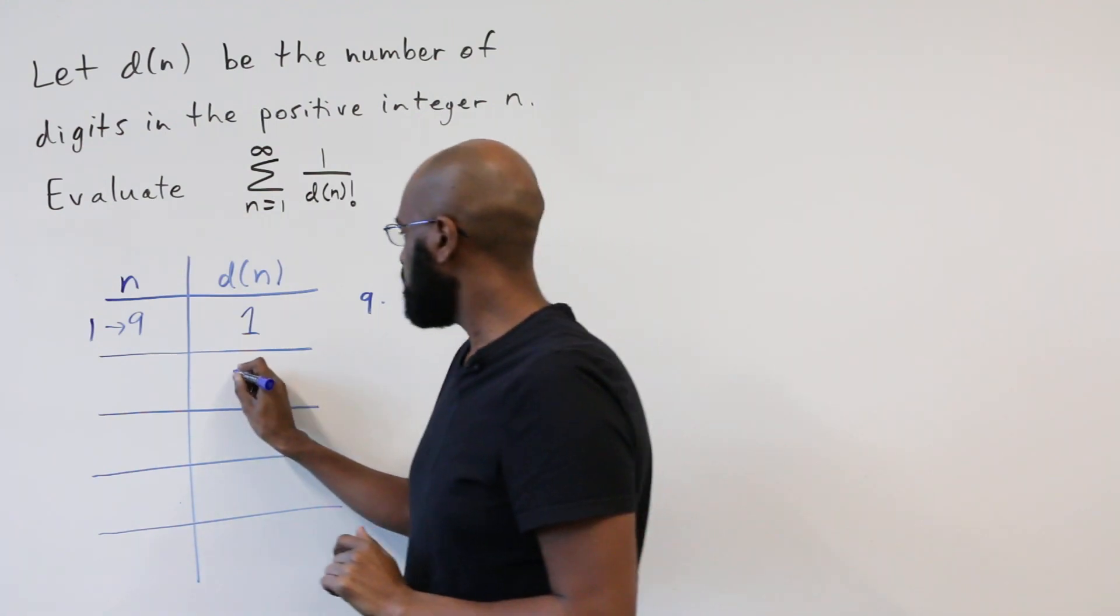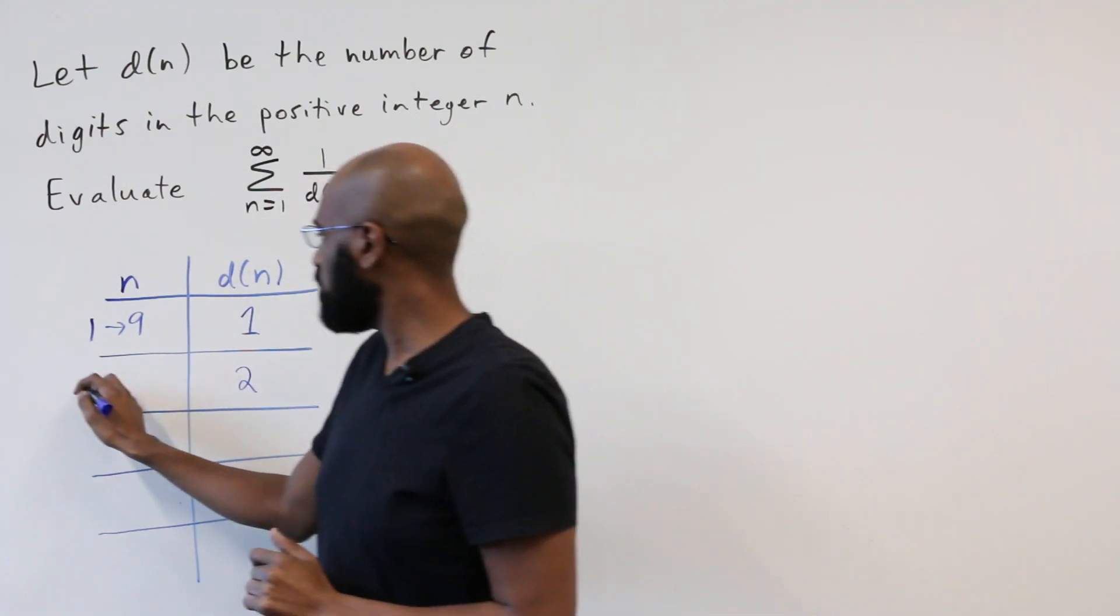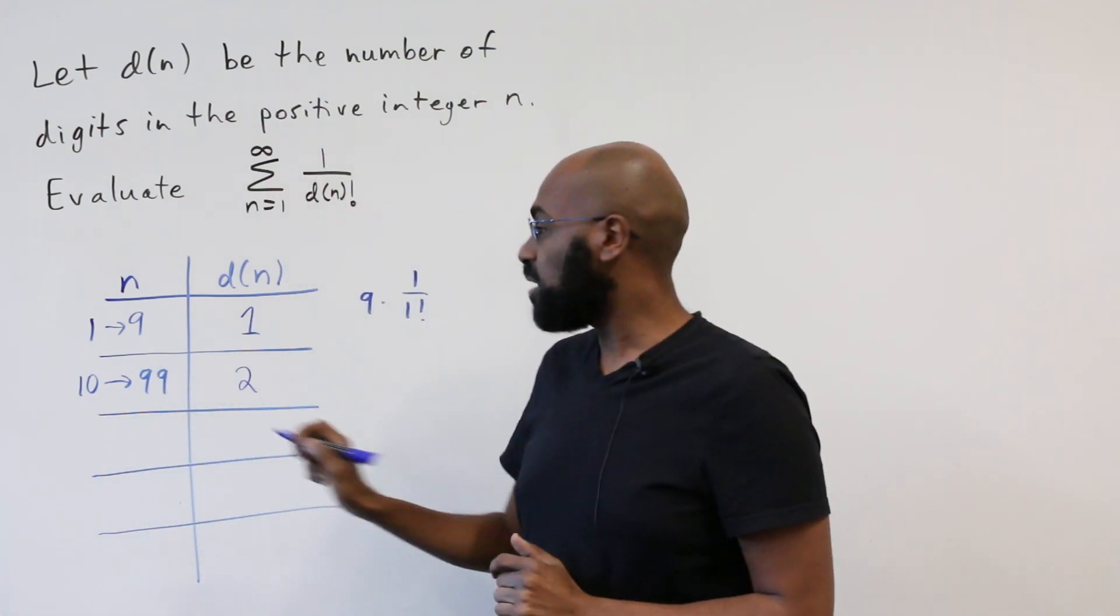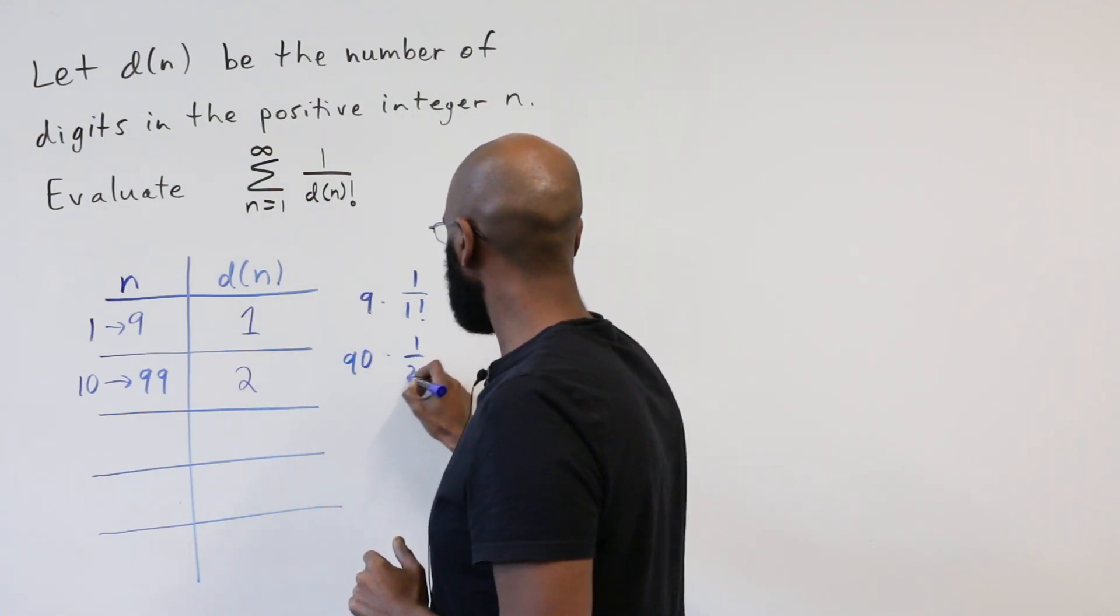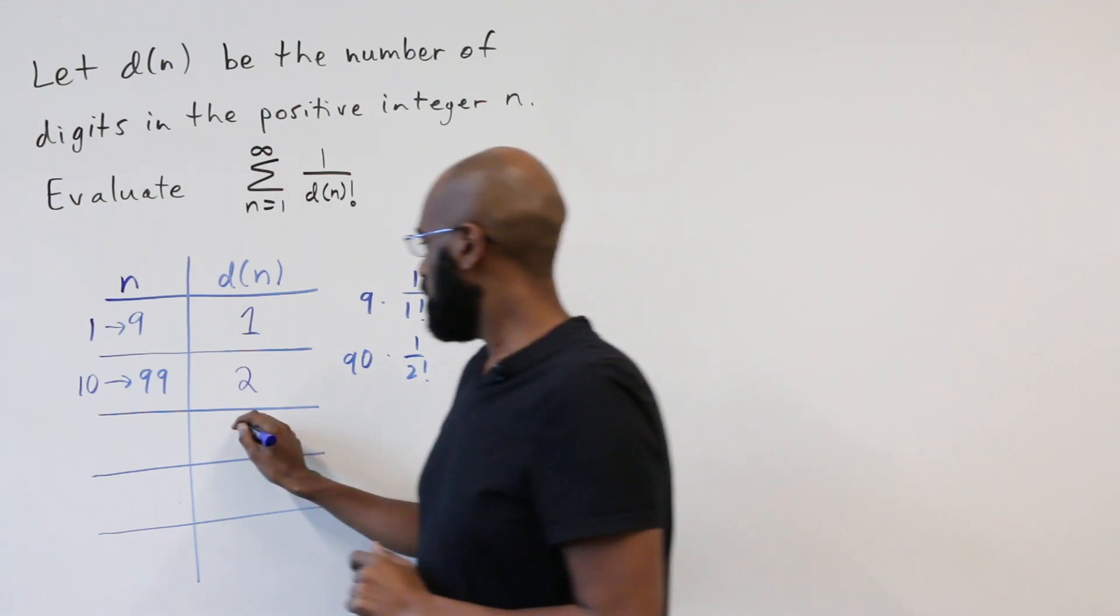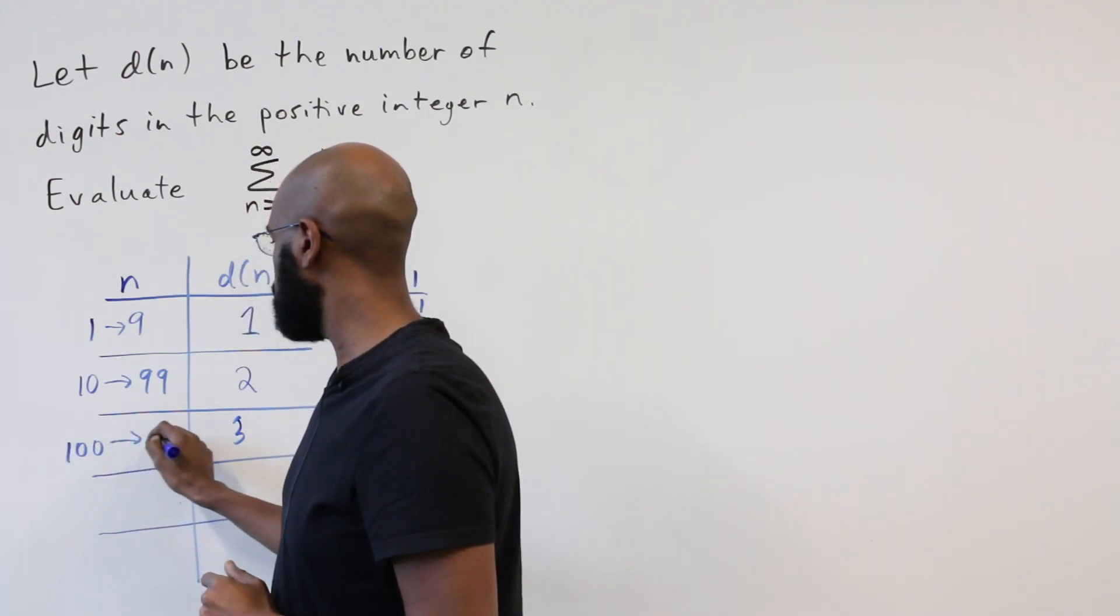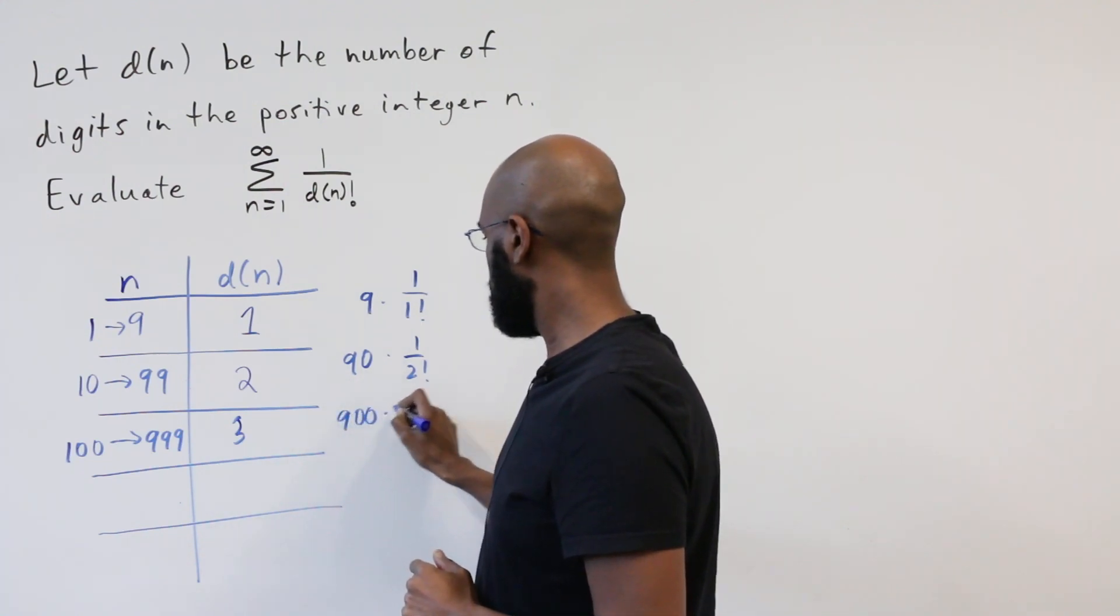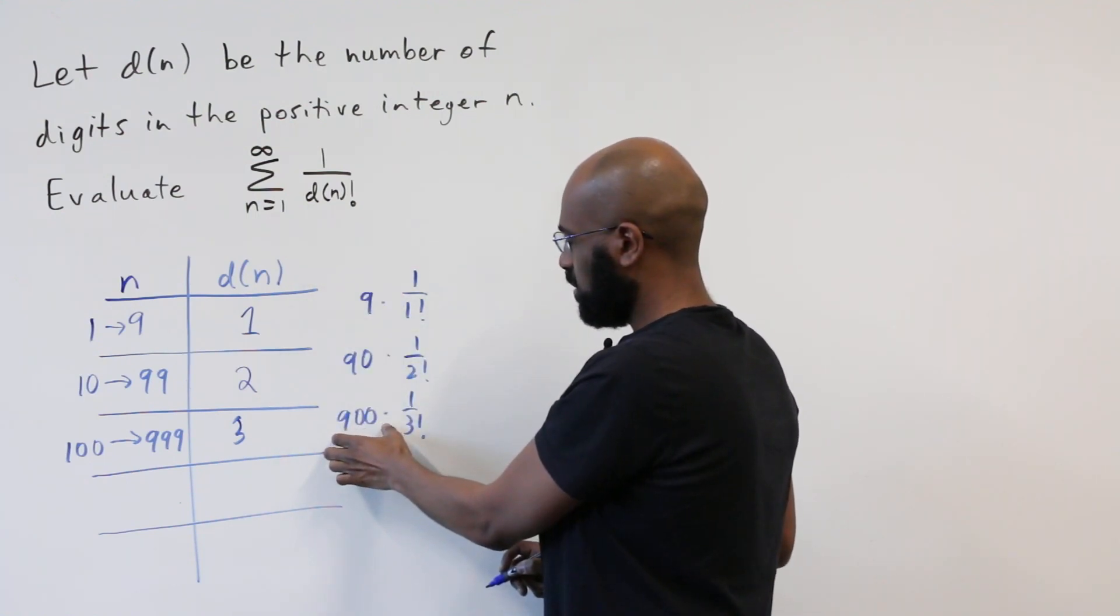Okay, now let's look at numbers for which the number of digits in them is 2. Those are the numbers between 10 and 99, inclusive. There's exactly 90 numbers in this list. So we'll see in this sum, 1 over 2 factorial appearing exactly 90 times. All right, similarly, the numbers with three digits are the numbers between 100 and 999. There's 900 of those numbers. So the contribution of 1 over 3 factorial in this sum is 900.